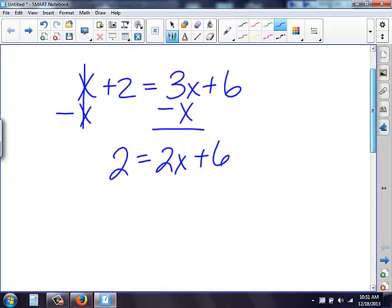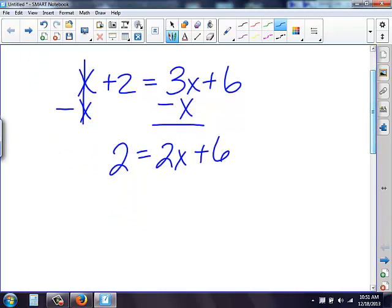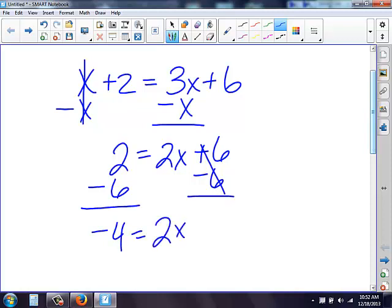Again, I'm getting this x by itself so I need to get rid of this 6 first. I have a positive 6, so I'm subtracting 6 on both sides. A 2 minus a 6 is a negative 4. This side it's gone and I still have 2x.